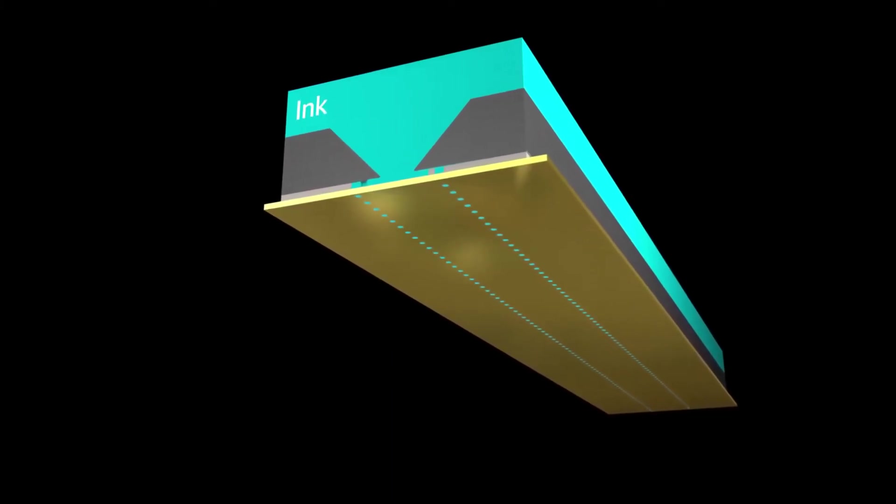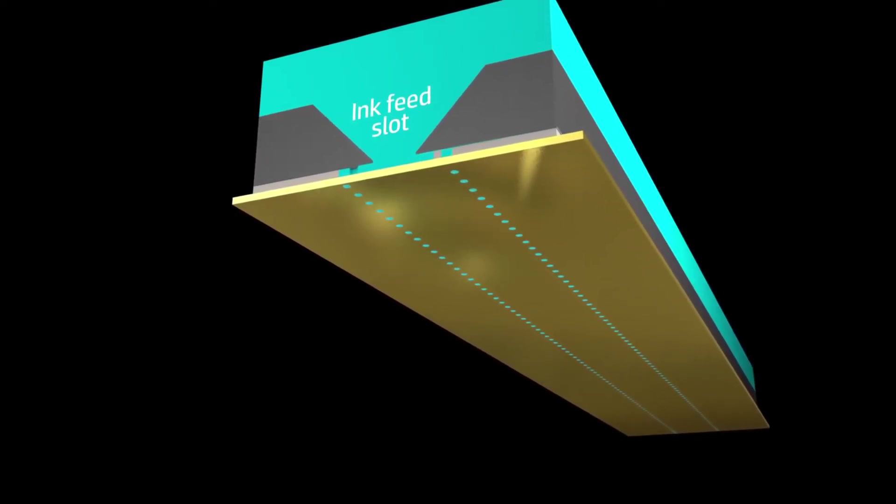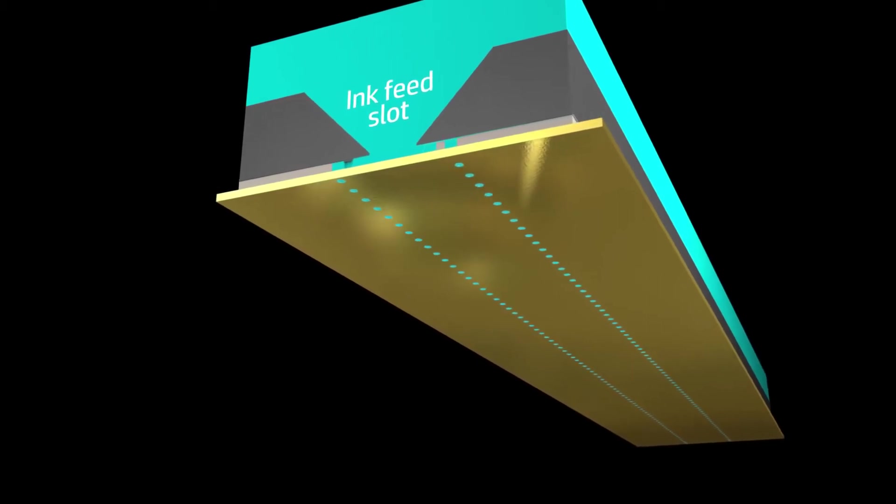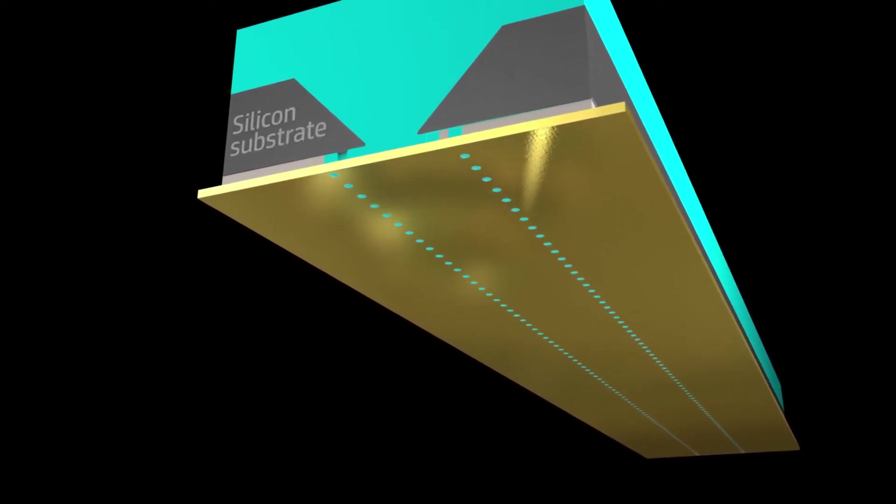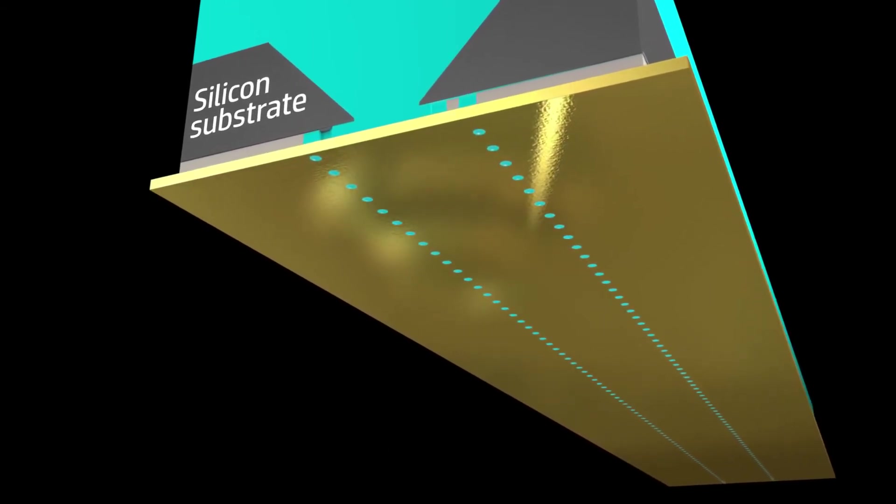The cyan region is filled with HP water-based ink. The wedge-shaped area is an ink feed slot cut through the silicon. It supplies ink to the nozzles. The printhead's electronic and fluidic components are built on a silicon substrate, shown in gray.